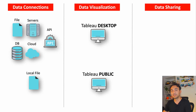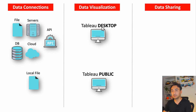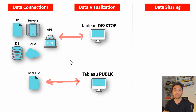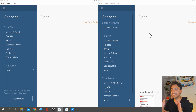I have a chart here to explain the differences in a simple way. In the middle we have our tools — Tableau Desktop and Tableau Public — both under data visualization. On the left side we have data connections, on the right side data sharing. With Tableau Desktop we can connect to files, servers, APIs, cloud, and databases. With Tableau Public we can connect only to local files.